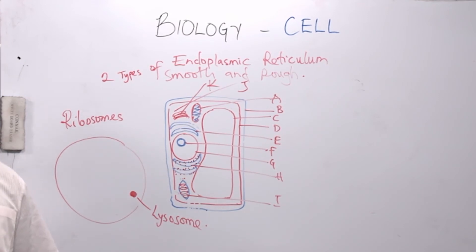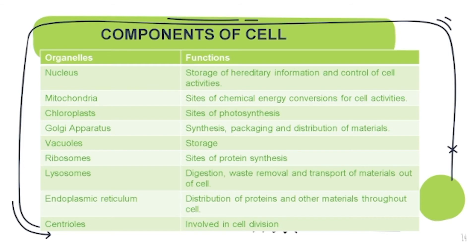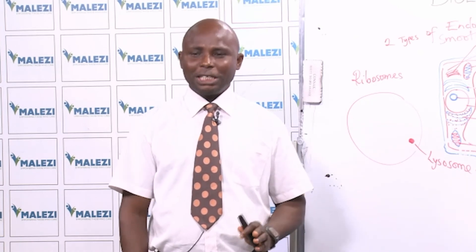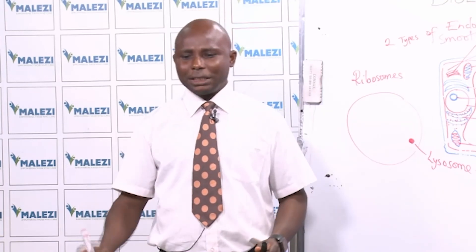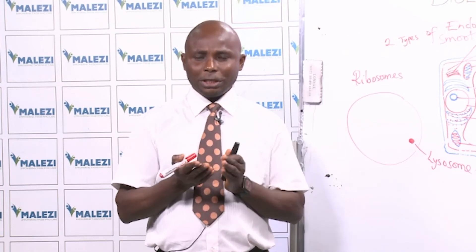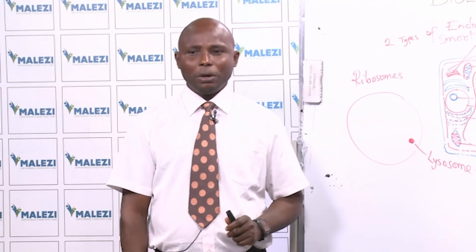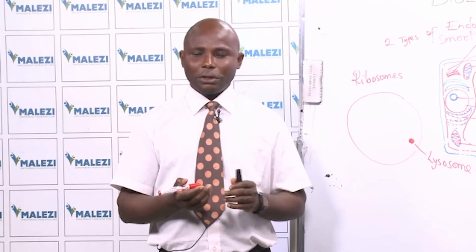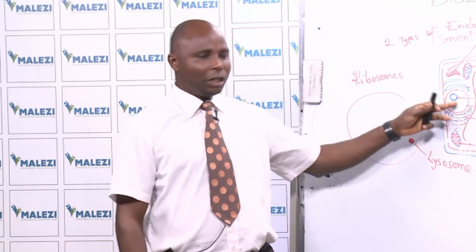Let's look at the functions of the components we have discussed. Nucleus is referred to as the brain of the cell — it controls all the activities of the cell. Another function of the nucleus is that it houses the genetic materials: chromosomes and genes. These are the genetic materials present in the nucleus. Mitochondria — the main function of mitochondria is that it is the site where energy is generated, and that's why it is described as the powerhouse of the cell. Respiration takes place in the mitochondria.